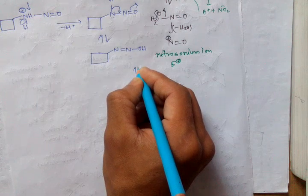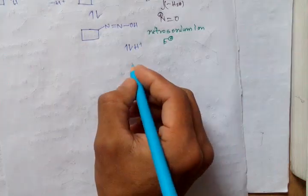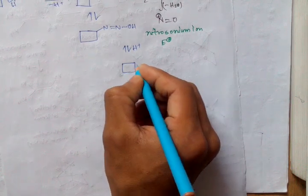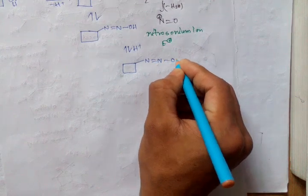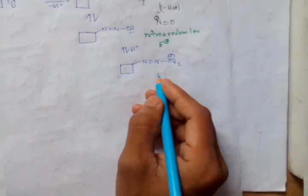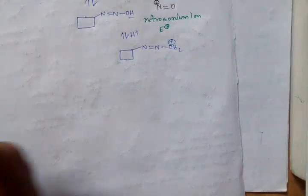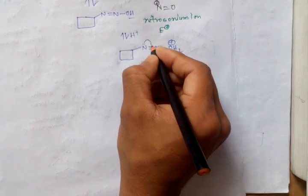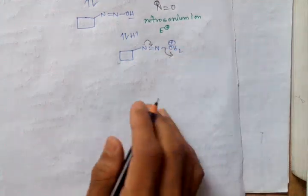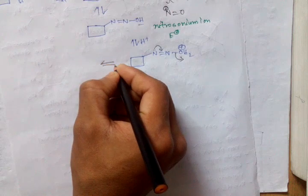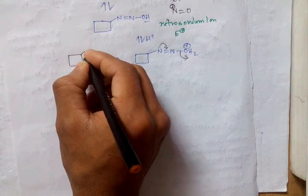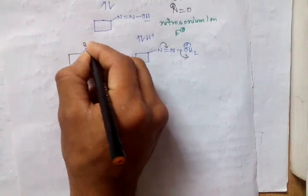This system in presence of H+ forms H2O when the OH is protonated. The lone pair of the nitrogen atom falls here and water is removed, and we get a system like that.